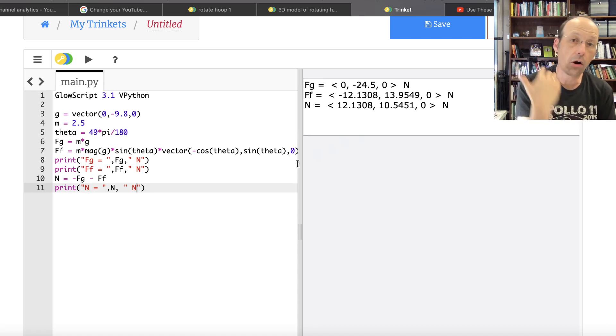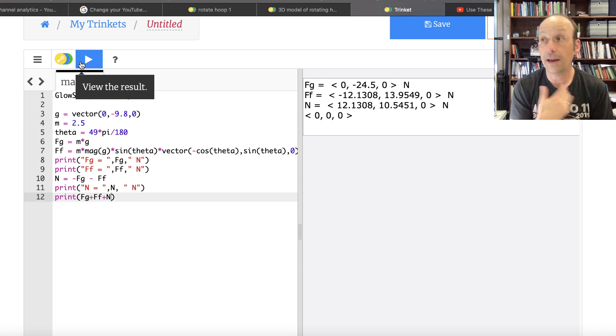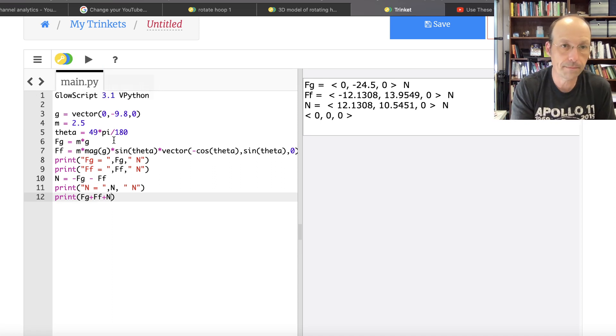Let's just go ahead and solve for that. n equals minus Fg minus Ff. And then print that one. n equals n. And so this n, I'm using n as the normal force. And there are my three vectors. Now we're going to do something awesome. Let's add them all up. So let's say print Fg plus Ff plus n. That would be the sum of the forces. And we get zero as expected.